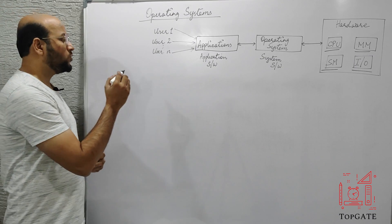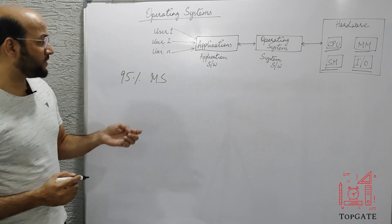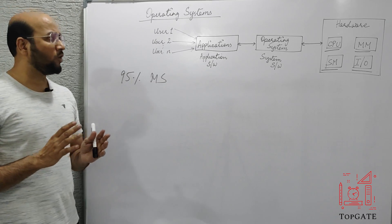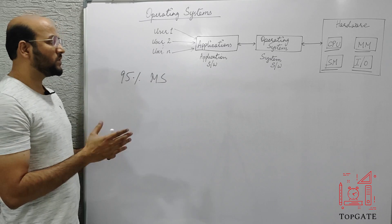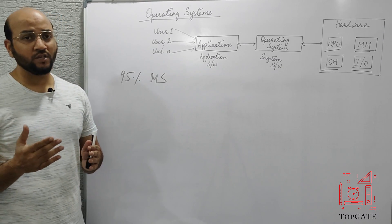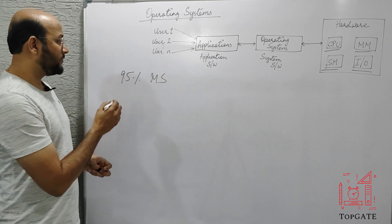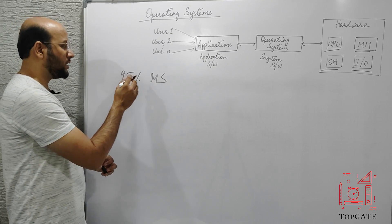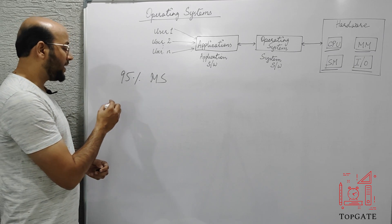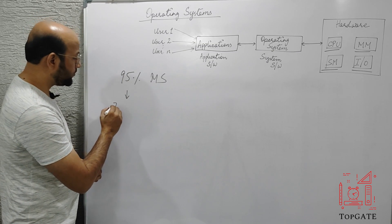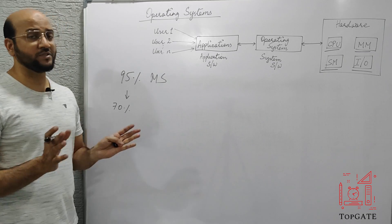In those times, almost 95% of the market was controlled by Microsoft. After that, many companies came into existence and all these companies, including Microsoft, started to work on providing convenience to the user. With the advancement of operating systems, the operating systems we are using today have a graphical user interface — they are providing certain graphics so we have proper graphics available to interact with the hardware. If we talk about the current scenario, this 95% got reduced to almost 70%. So 70% of the market is still captured by Microsoft and the remaining 30% is taken by other companies.